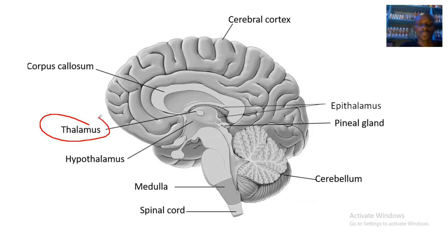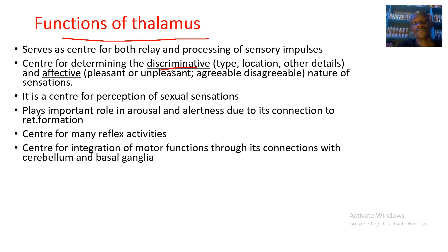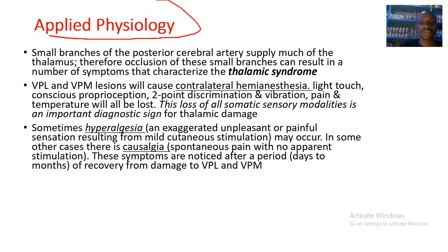The thalamus is located deep in the center of the brain, oval in shape. Its functions include: serving as a center for relay and processing of sensory impulses; determining discriminative aspects of sensation such as type, location, and whether a sensation is pleasant or unpleasant; processing sexual sensations; playing an important role in arousal and alertness through connections to the reticular formation; serving as a center for reflex activity; and integrating motor functions through connections with the cerebellum and basal ganglia.